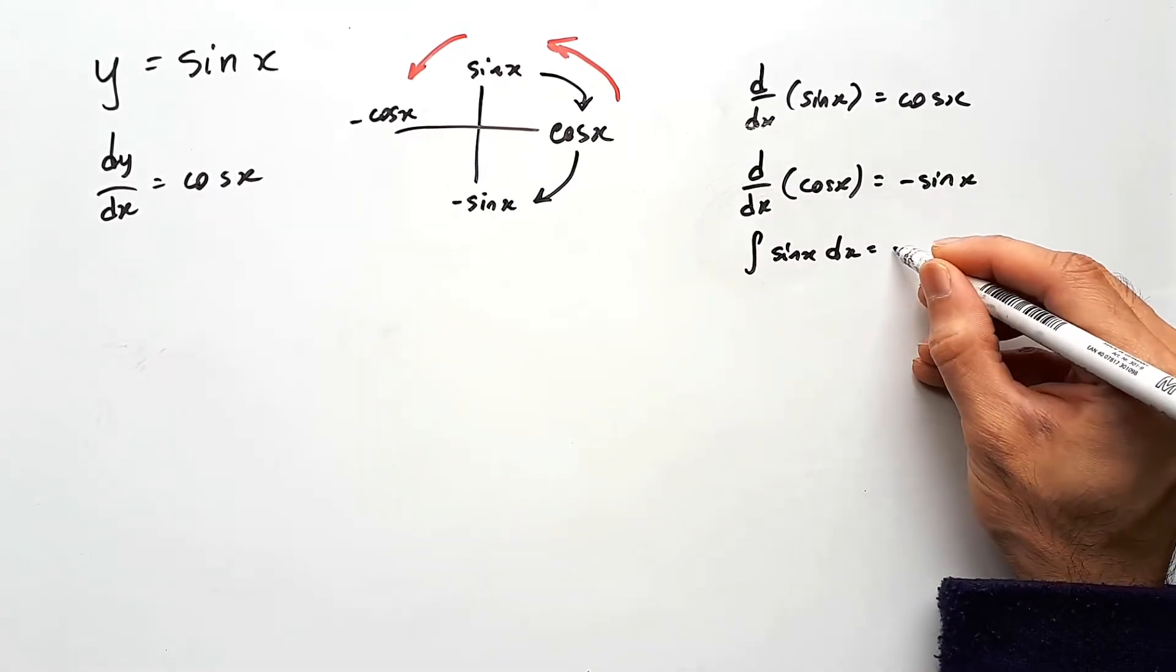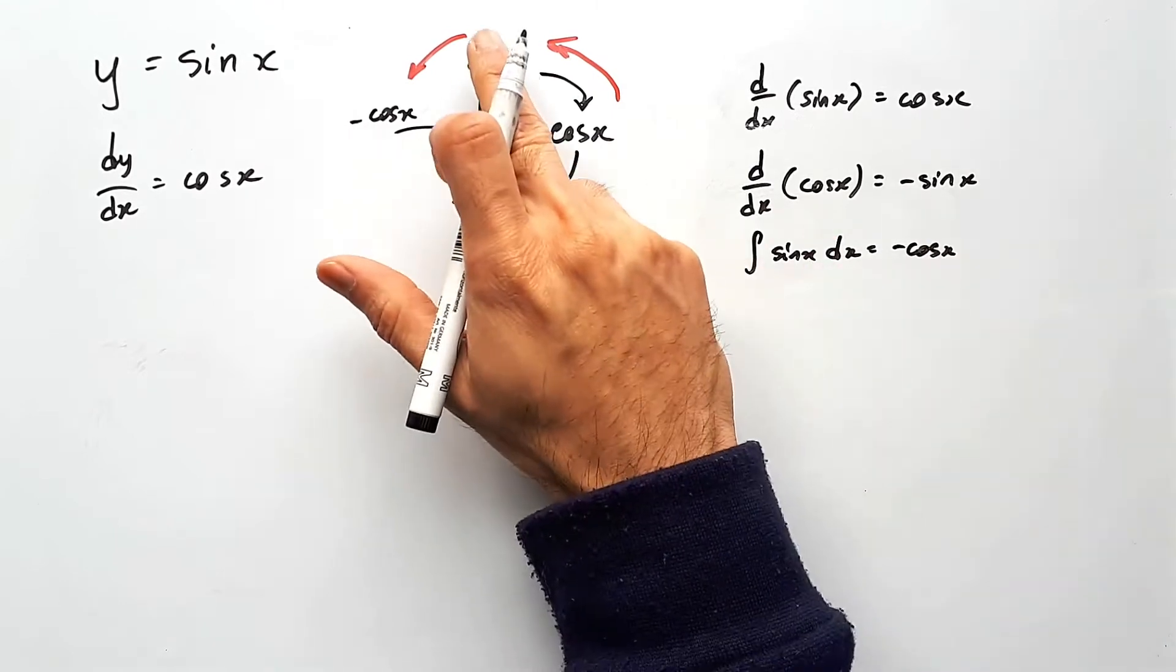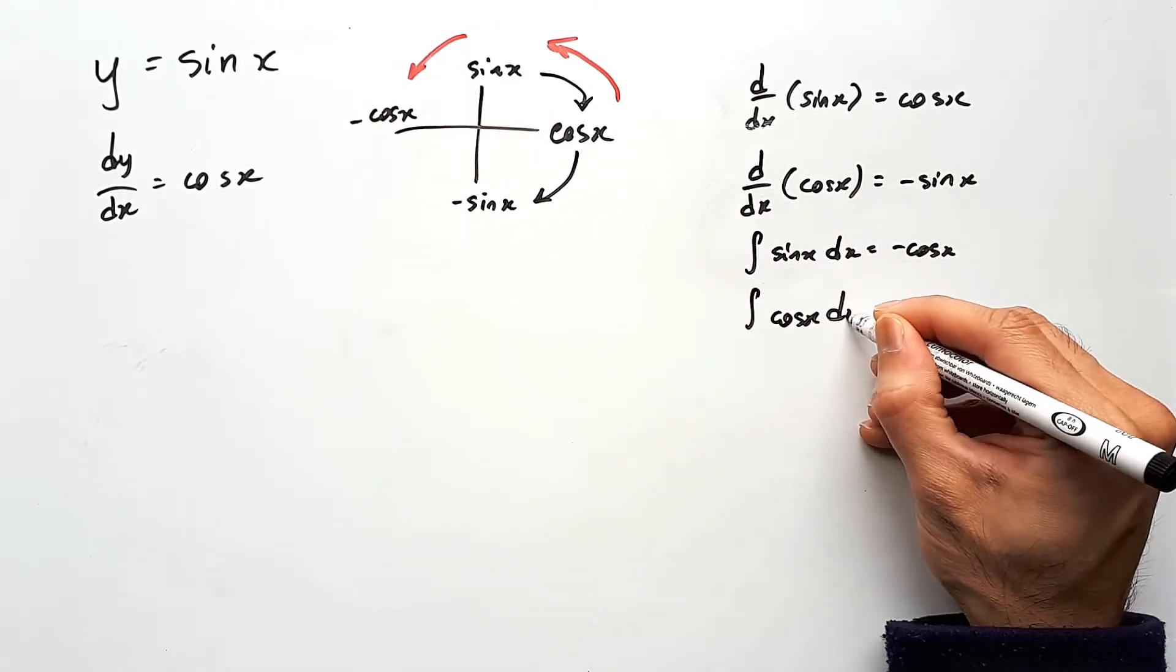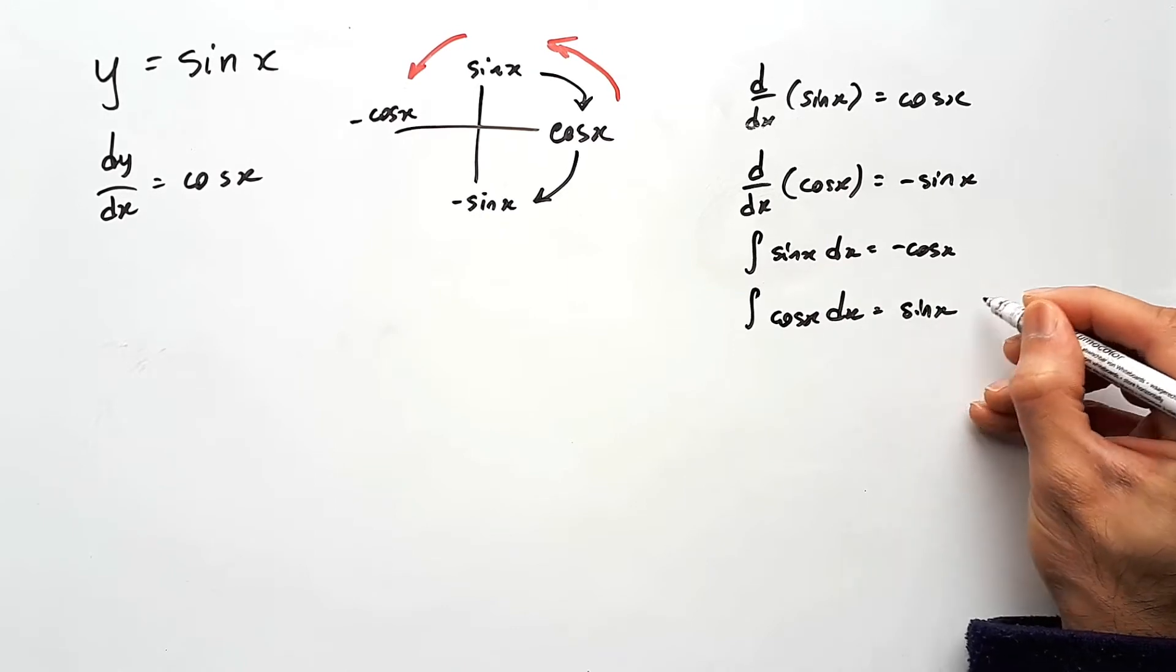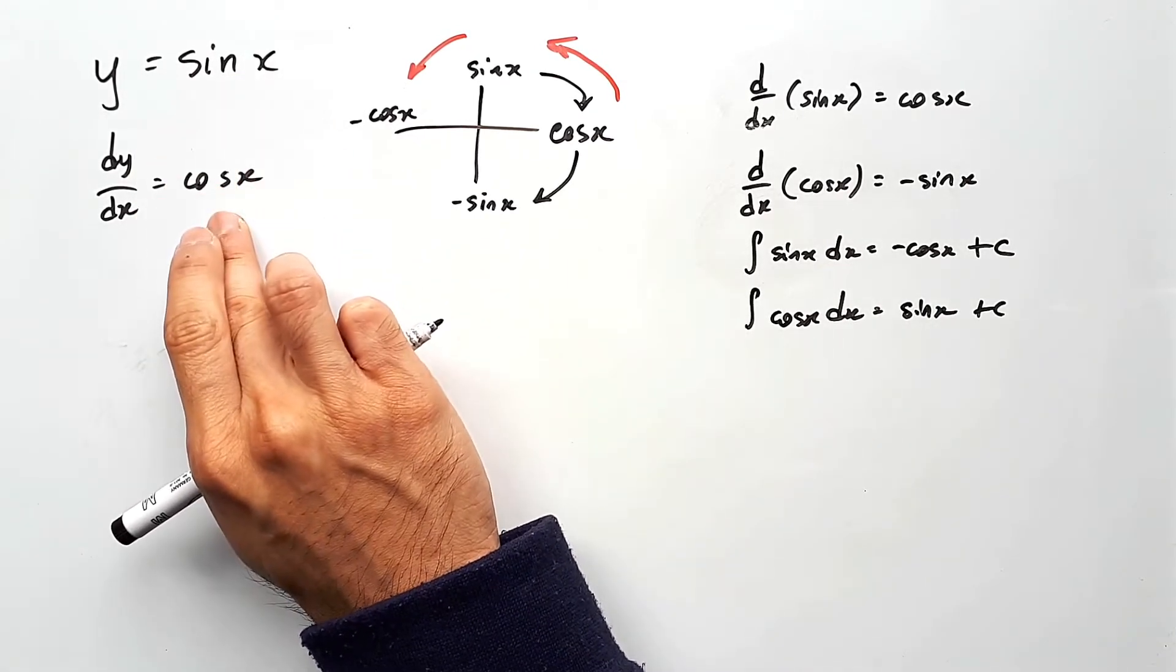Integral of sine x is negative cos x. As you can see from rotating forwards, integral of cos x would be sine x. So that's the derivative of sine x. We will need that later.